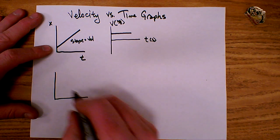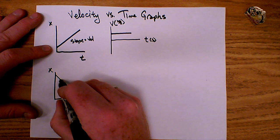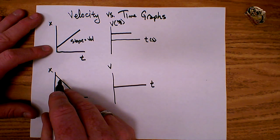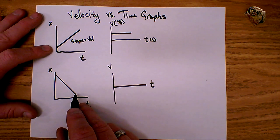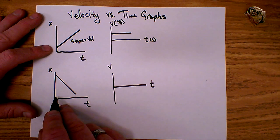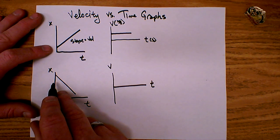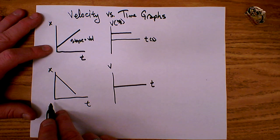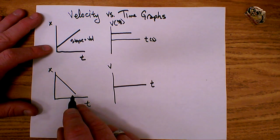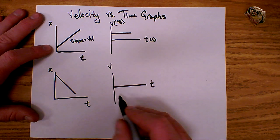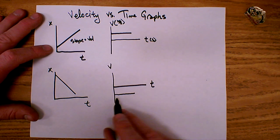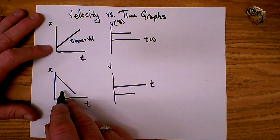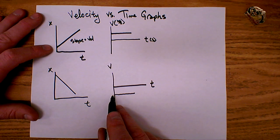Let's look at another example. Suppose my position-time graph has a constant negative slope. The object starts out far from the origin and is moving towards the zero position — moving towards the origin. So on the velocity versus time graph, I have a constant negative slope, therefore a constant negative velocity. If I had numbers on my position graph, I could calculate the exact slope, and that would be the exact value that goes on the velocity axis.